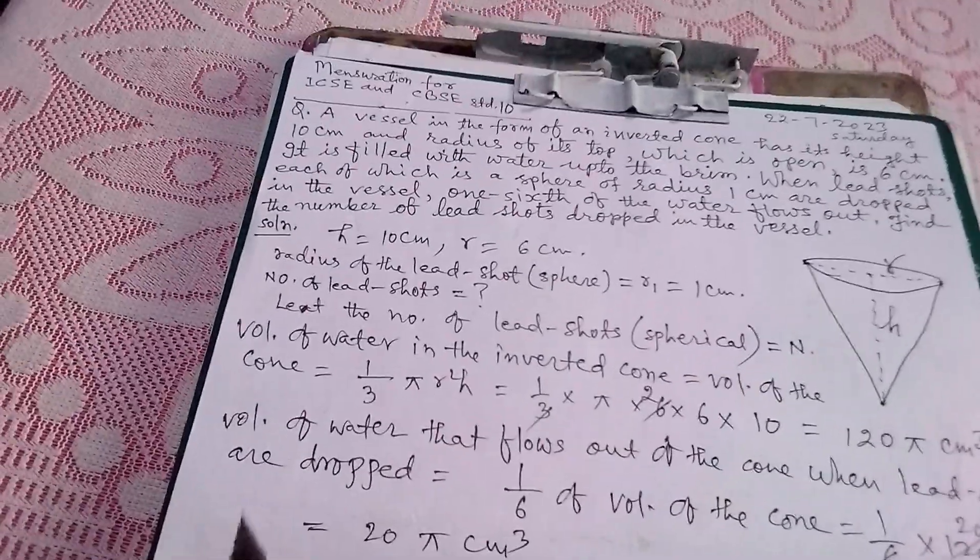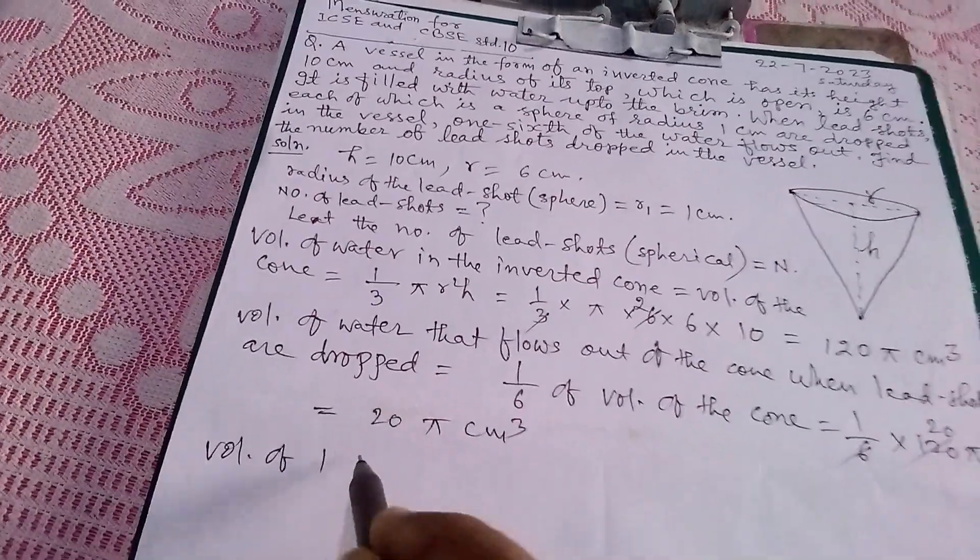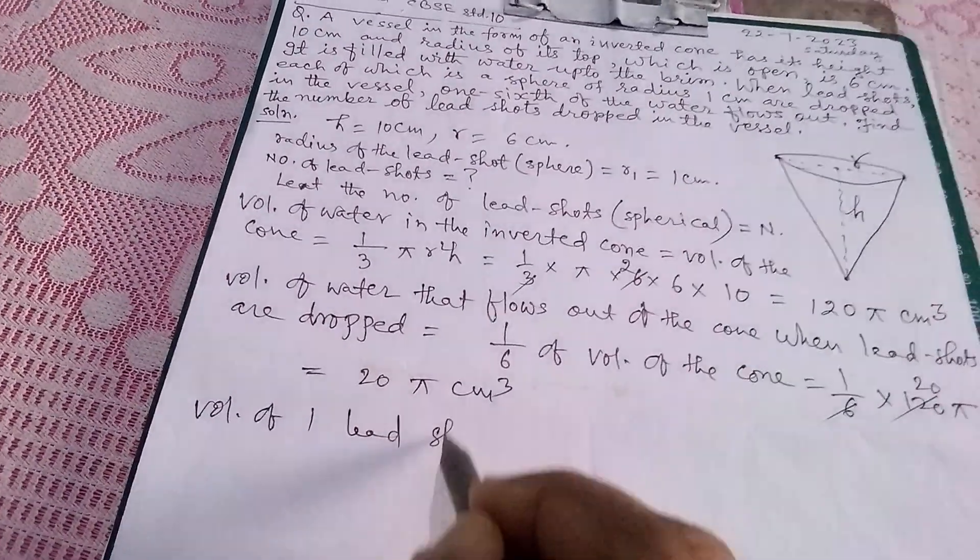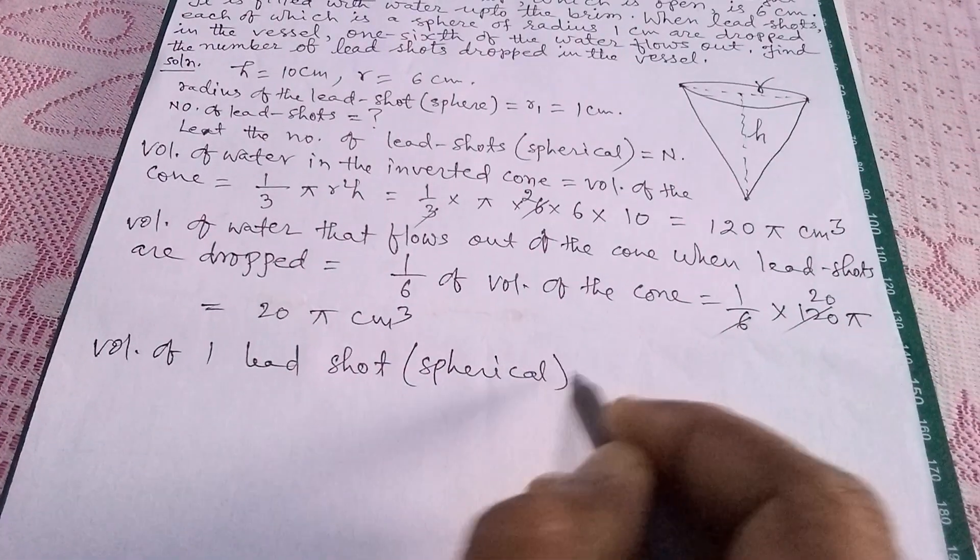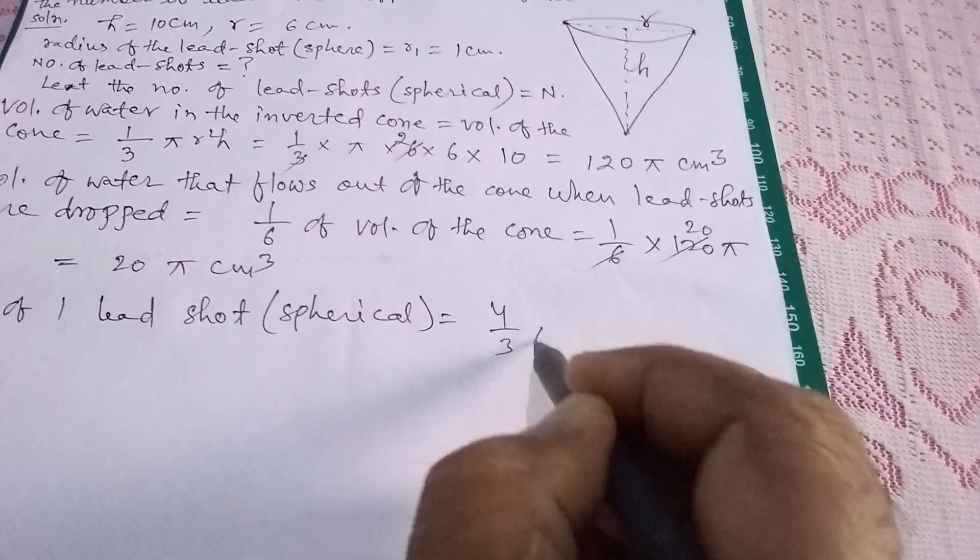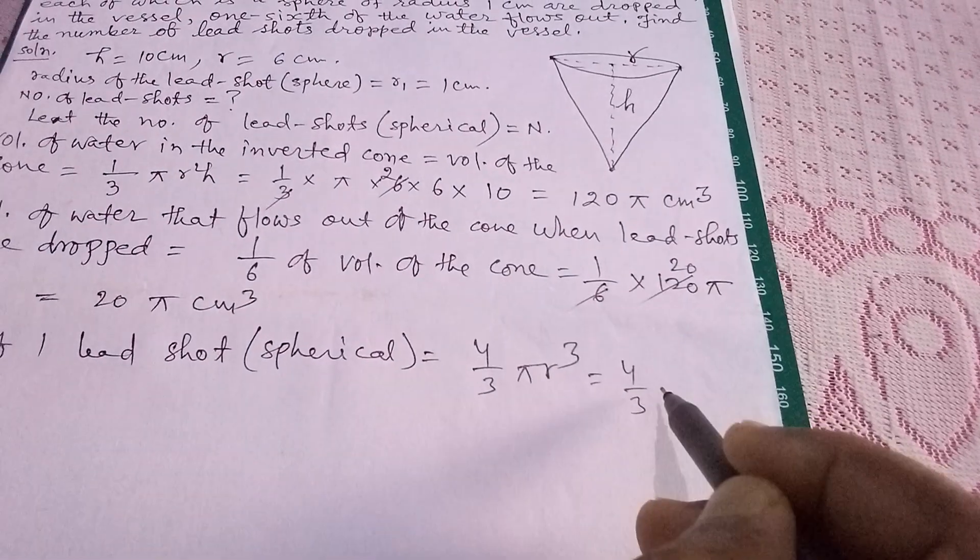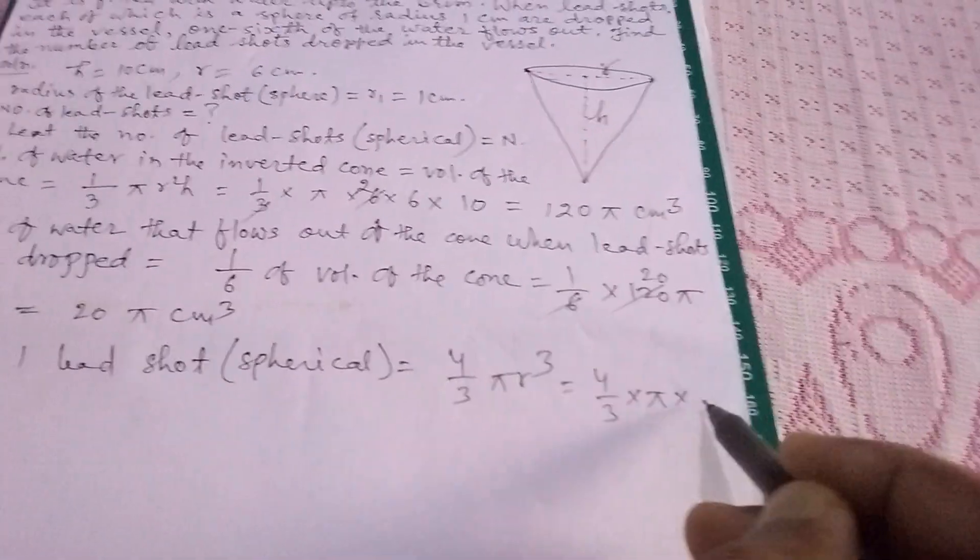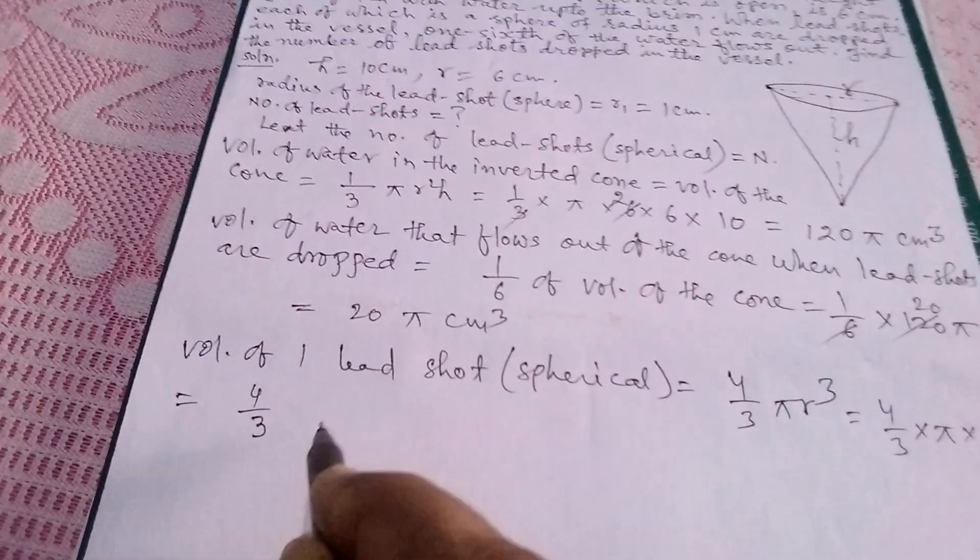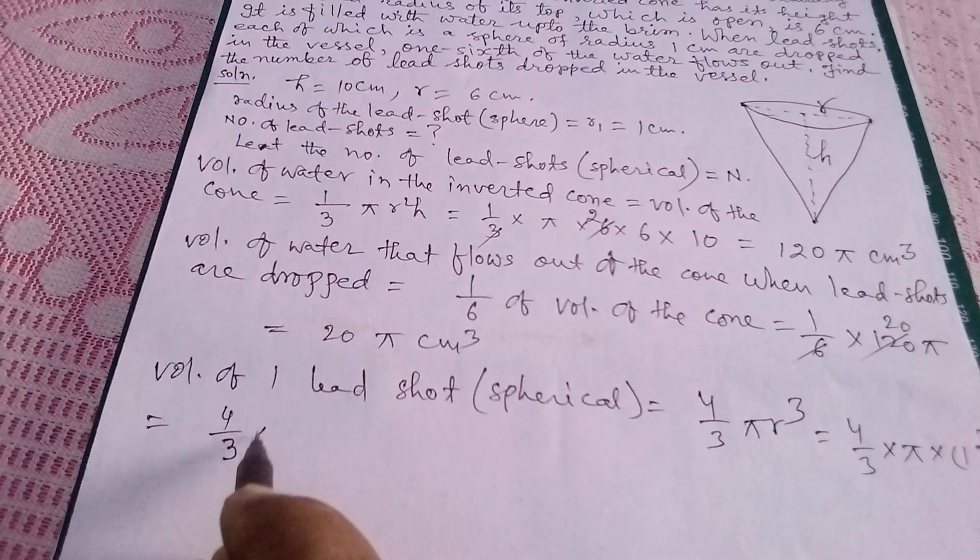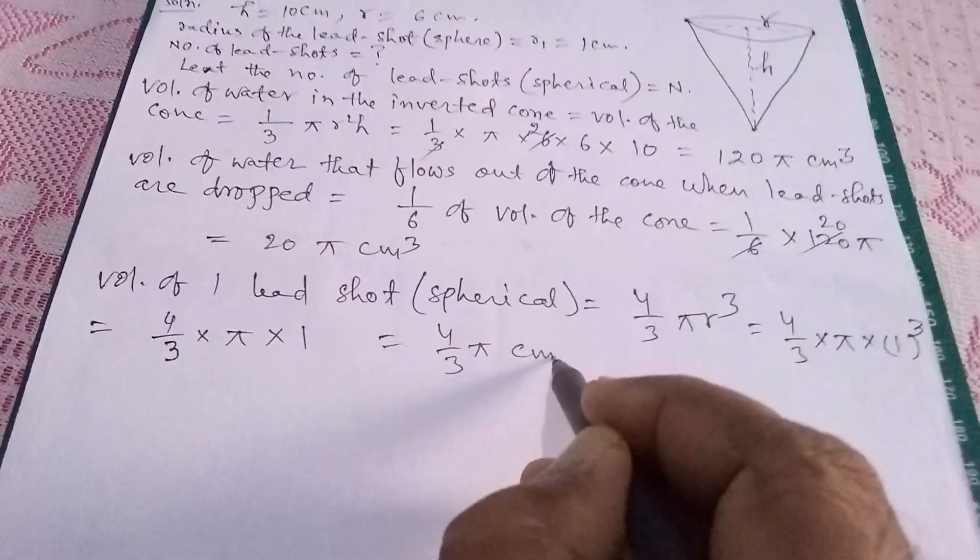And now, volume of one lead shot that is spherical is equal to 4/3 π r³. So this is 4/3 π × 1³, that is equals to 4/3 π cm³.